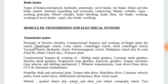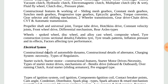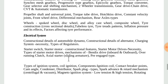Transmission topics include principle of friction clutches, constructional features and working of single plate dry clutch, diaphragm clutch, cone clutch, centrifugal clutch, semi-centrifugal clutch, and vacuum clutch. The electrical system contains constructional details of automobile dynamo, alternator, and starter system.